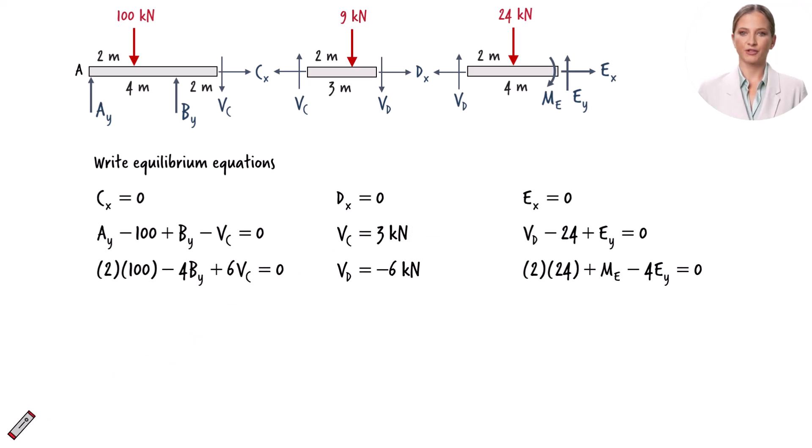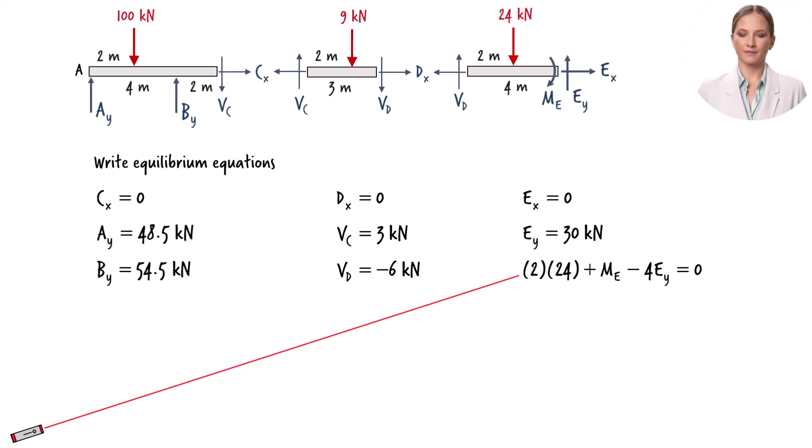Knowing Vc, we can determine Vy from this equation. And this equation can be solved for Ay. Then, we can determine Ey from this equation. And this equation can be used to determine Me.